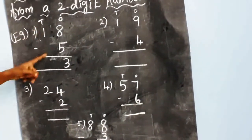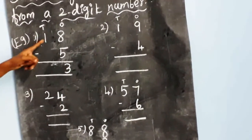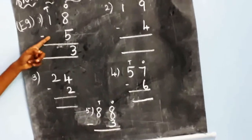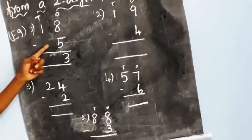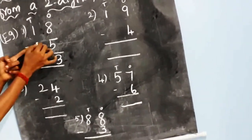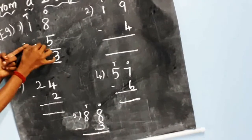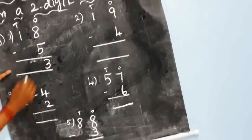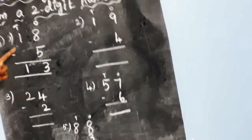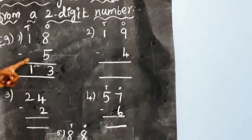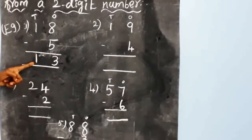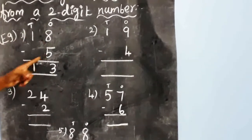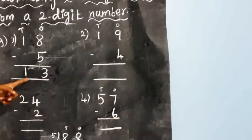Now we subtract the tens place. Here there is one, and there is no number in the tens of the second number, so one minus zero equals one. So eighteen minus five is equal to thirteen.